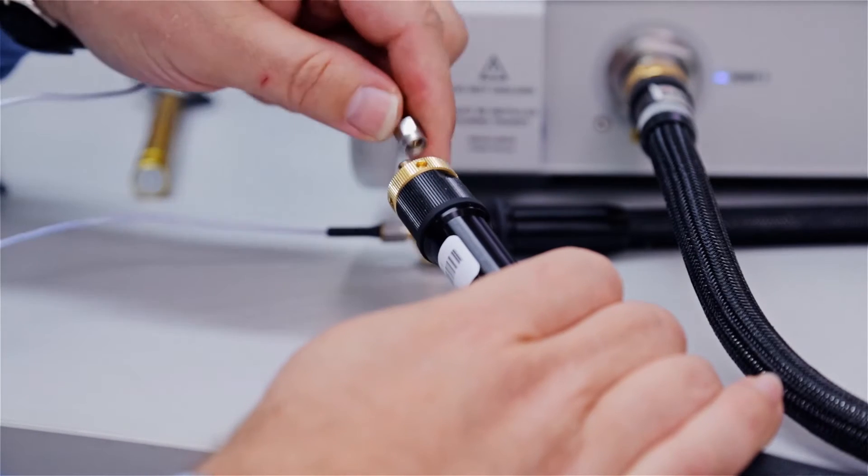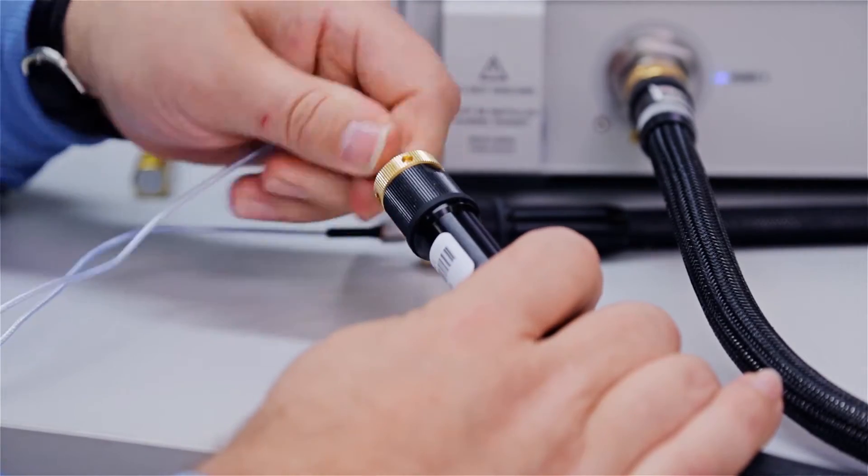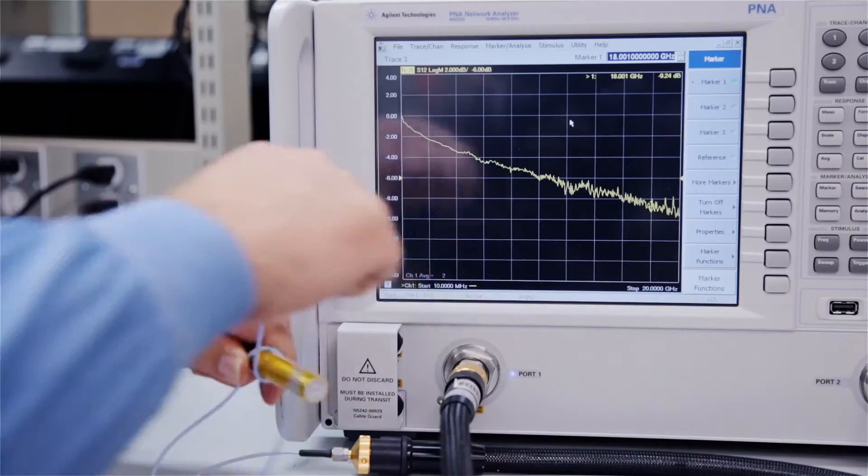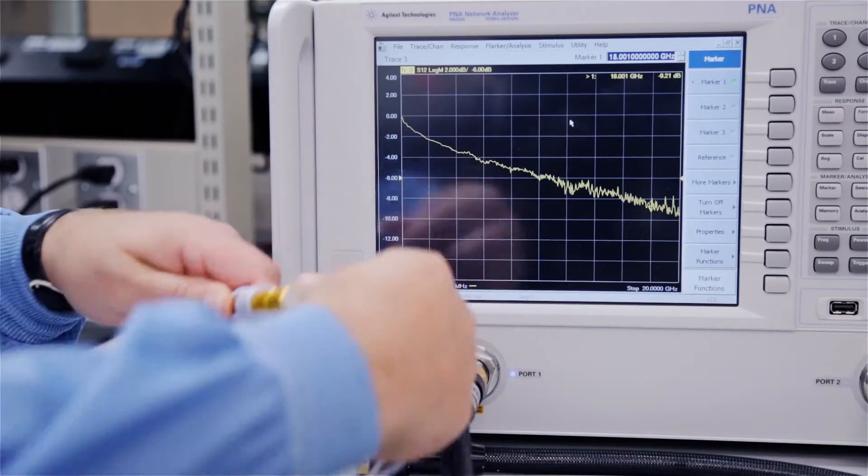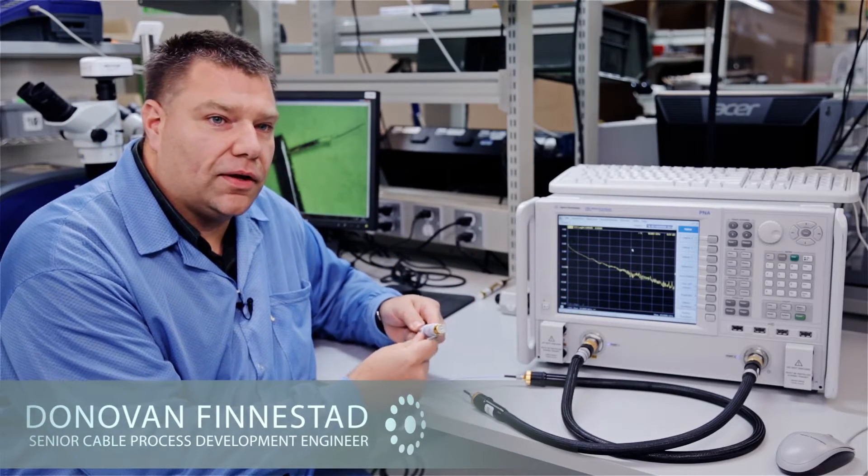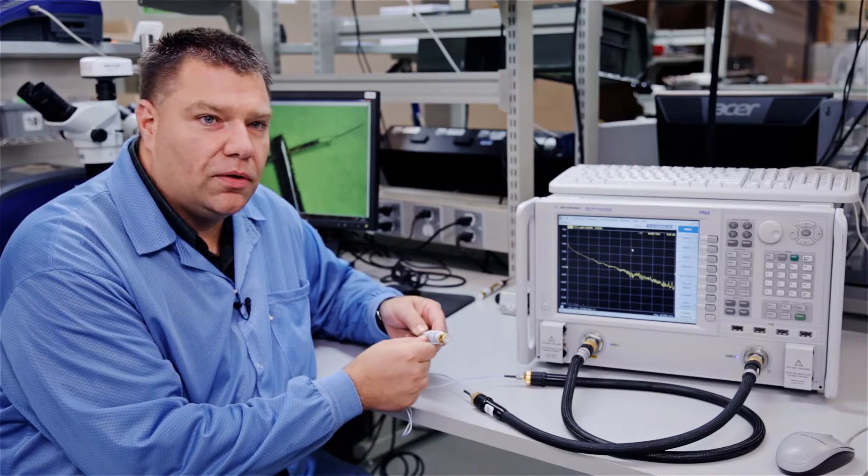What we have here is a 25 gauge cable that's built with the EPTFE dielectric, and what we're going to do is wrap this around a mandrel and show how stable it is under stress. Typically the cable, after wrapping around such a small diameter, you would see a big drop in the insertion loss, but with our EPTFE dielectric it makes the cable way more robust and a lot more stable under stress.